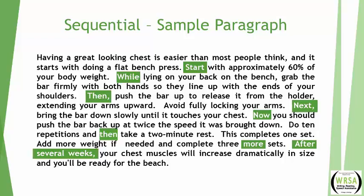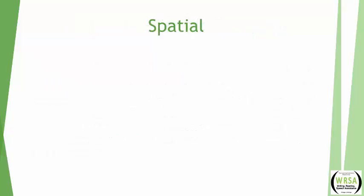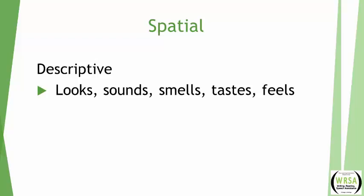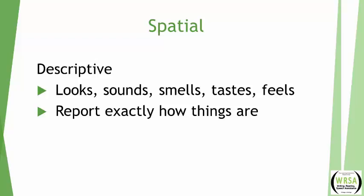Another method of organization is called the spatial method. That's when you have to write a description of something and show someone in words what something looks like, sounds like, feels like, or tastes like. For example, nurses have to describe what something looked like when they enter a room, and officers have to describe a crime scene. That kind of description is done spatially.